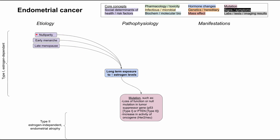Nulliparity — meaning not having carried a pregnancy to a viable age, or more than 20 weeks — means more menstrual cycles, and more menstrual cycles means greater exposure to high estrogen throughout a woman's reproductive years. Early menarche and late menopause do the same thing: they increase the number of menstrual cycles a woman has had, increasing exposure to high estrogen levels.